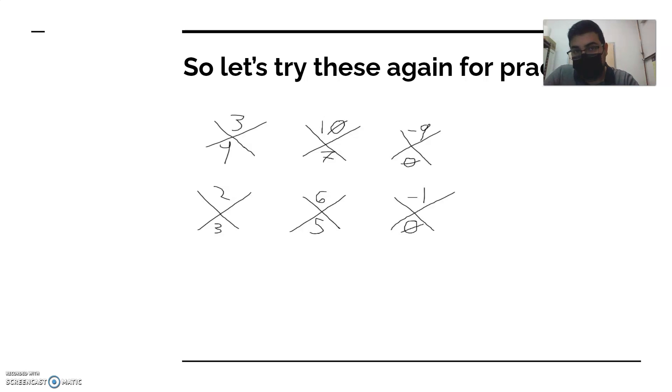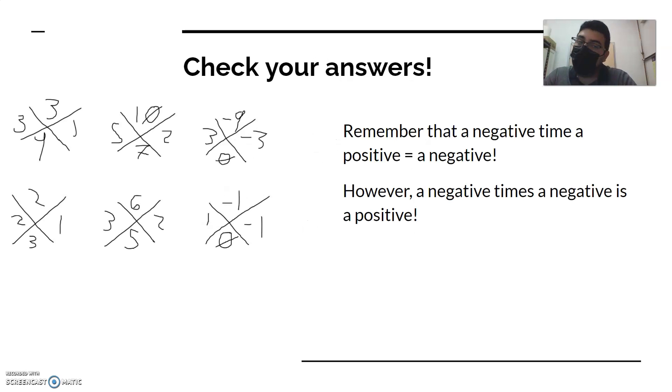Time to resume the video, so check your answers. So for the first one, 3 times 1 equals 3, 3 plus 1 is 4. 5 times 2 is 10, 5 plus 2 is 7. We went through the negative 9 problems, so 3 minus 3.